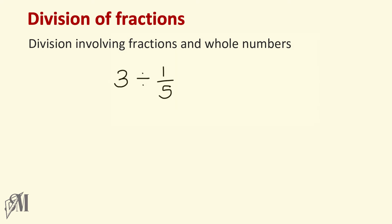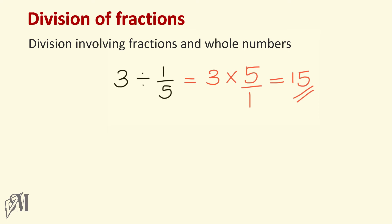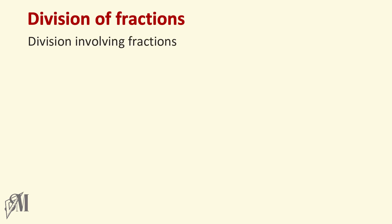The last example in this section: three divided by one over five. Just like before, write three as it is, then multiplication. The reciprocal of one over five is five over one. Three times five is fifteen, and one can be neglected, so our answer becomes fifteen.